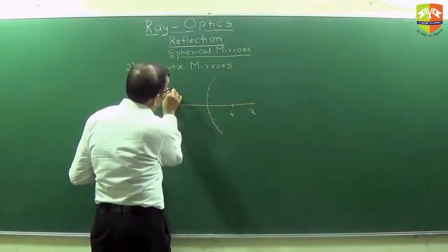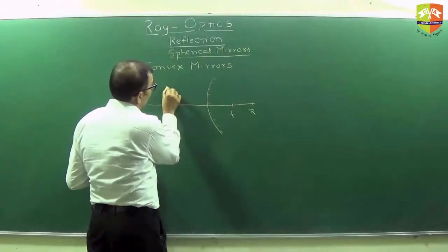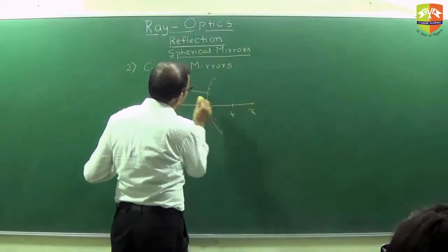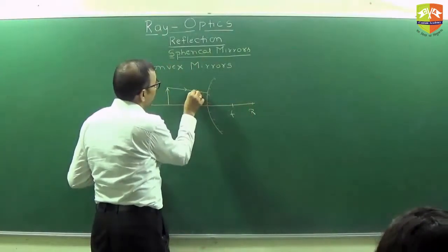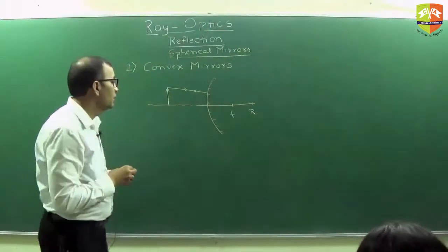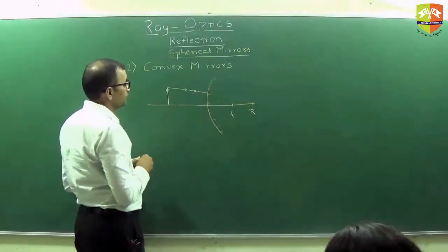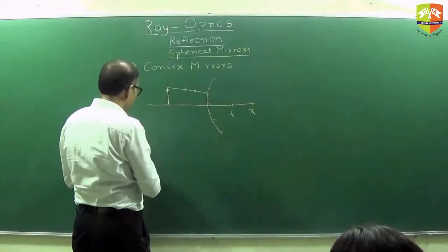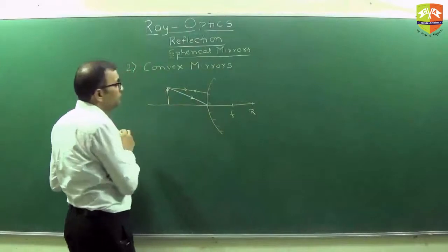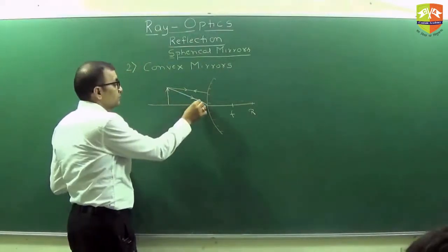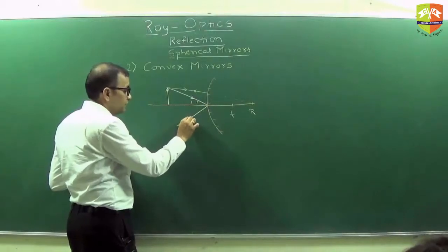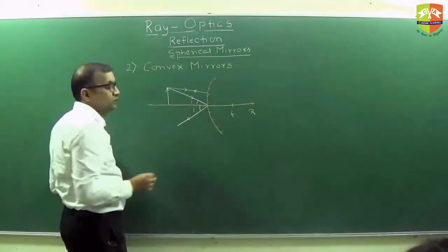One ray that goes towards R — what happens to that ray? This will get reflected back because this is along the normal. And one ray that goes like this — what happens to this one? This is angle I, it will reflect off like this, and this angle will also be I.